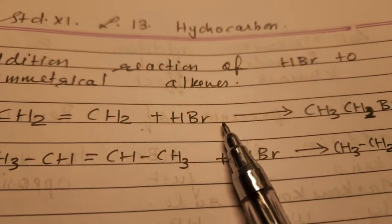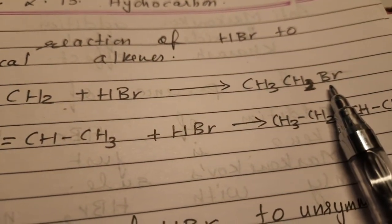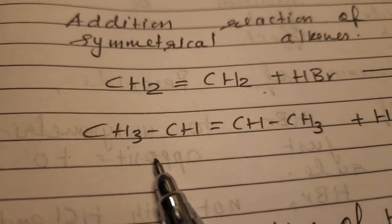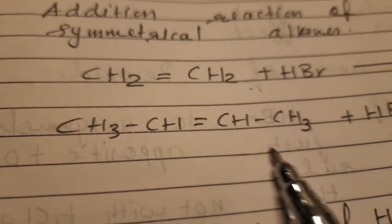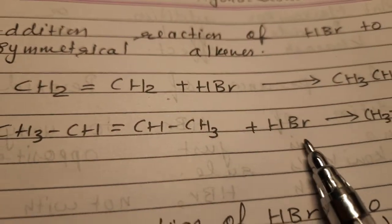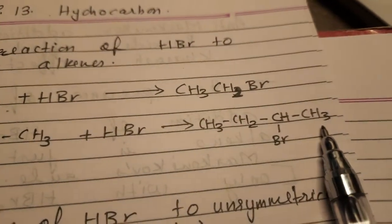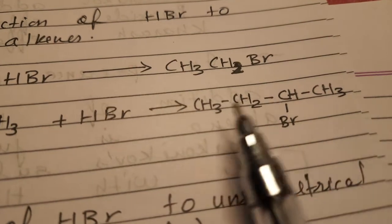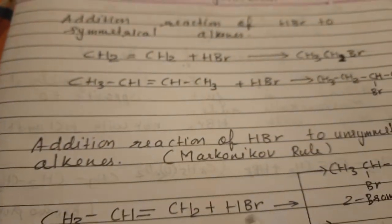An example of a symmetrical alkene is ethene, C2H4. When HBr is added to ethene, the double bond opens and both H and Br are added, forming bromoethane. Similarly, but-2-ene is another symmetrical alkene — it has four carbons with the double bond at position 2. When HBr is added to but-2-ene, it gives CH3-CHBr-CH2-CH3.